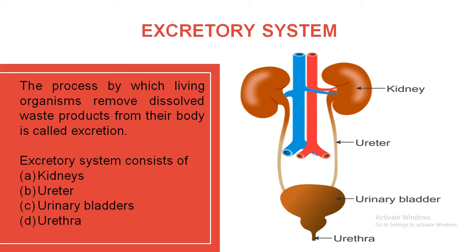Let's see what are the organs of the excretory system. Just as the heart is the main component of the circulatory system, the main component of the excretory system is the kidney. We have a pair of reddish-brown, bean-like structures named as kidneys. This kidney is the filter or purifier of your body.